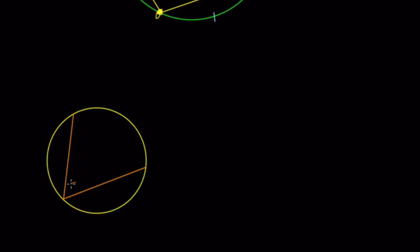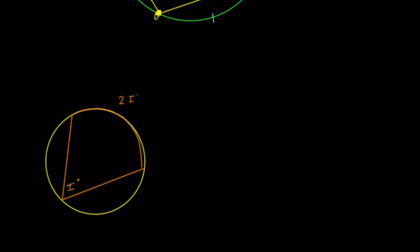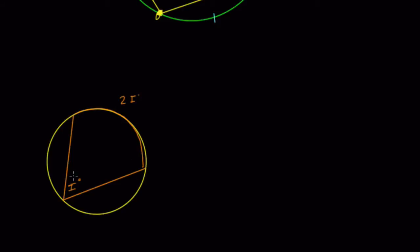Here is your inscribed angle i, and here's the arc it intercepts. The arc is twice as large in degree measure as the inscribed angle. This is true for any inscribed angle formed by two chords in a circle. The angle is half the measure of the arc it intercepts.